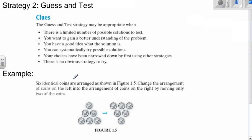So let's look at this example where we have six coins arranged in a triangle. We want to rearrange by moving only two coins so that we basically flip the triangle upside down.